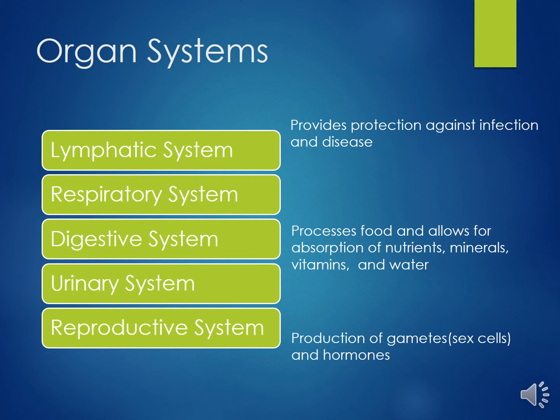The lymphatic system protects against infection and disease. The respiratory system is responsible for delivering oxygen throughout the body as well as removing carbon dioxide from the body. The digestive system processes food and allows for the absorption of nutrients, minerals, vitamins, and water. The urinary system filters blood and forms, stores, and eliminates urine from the body.